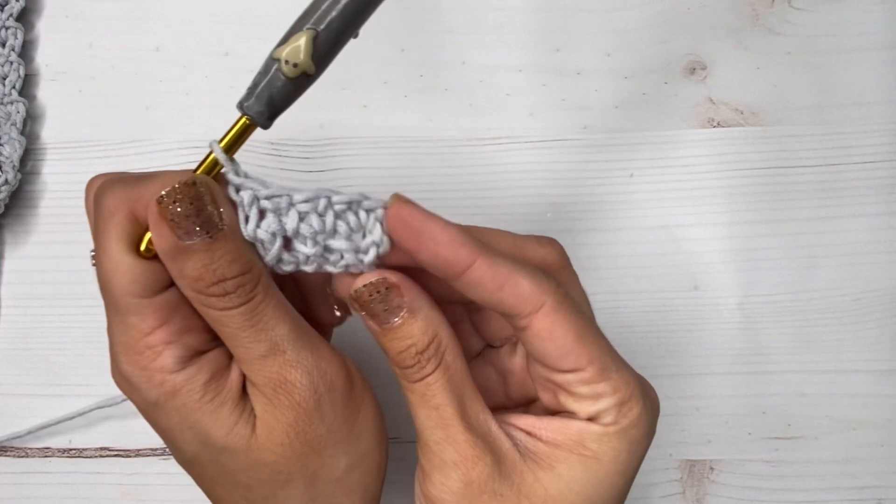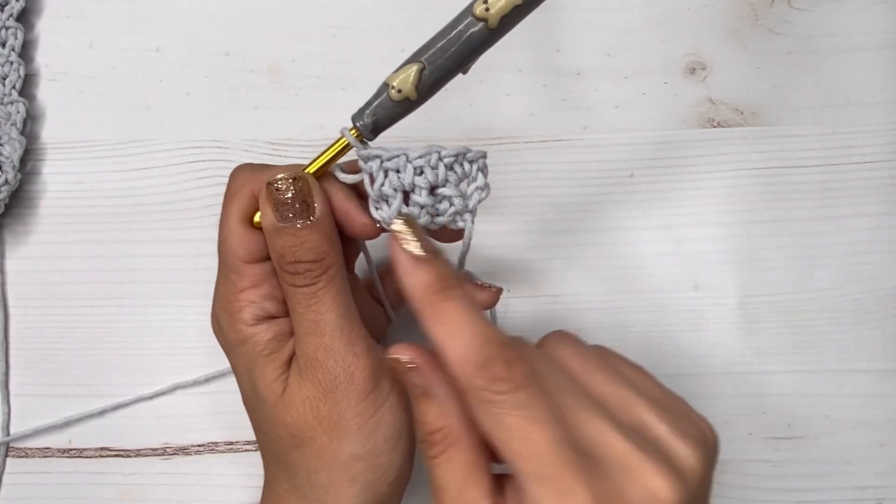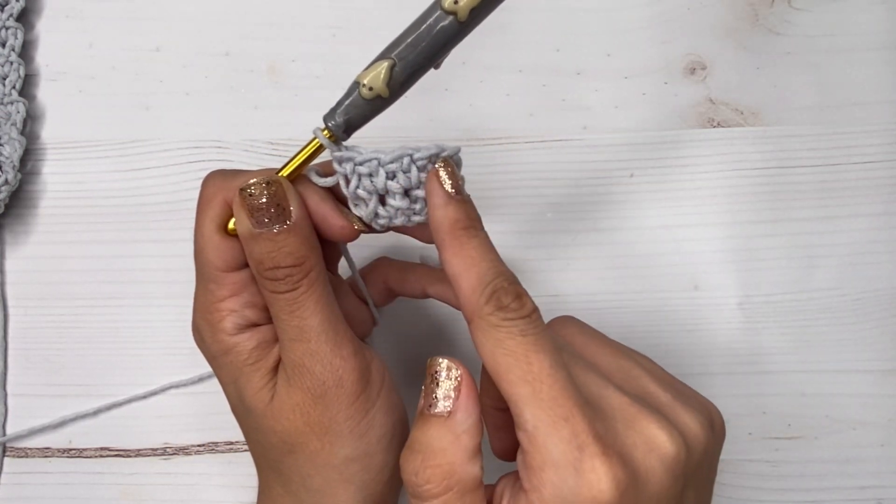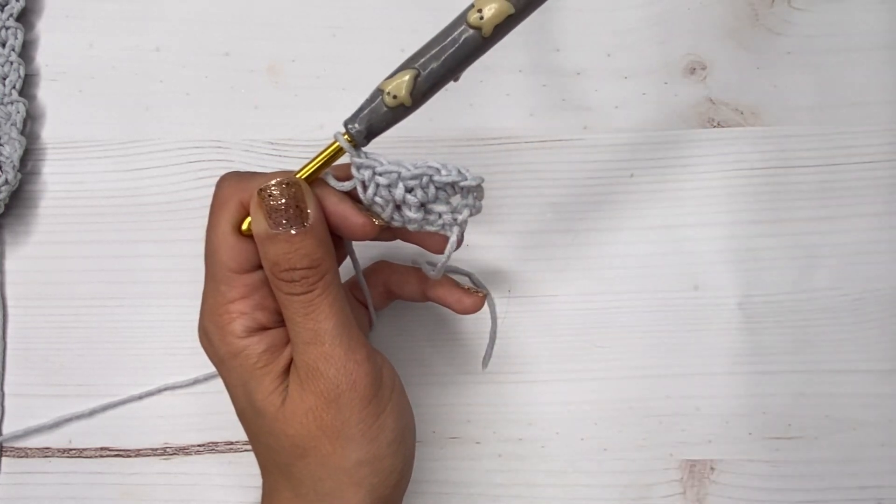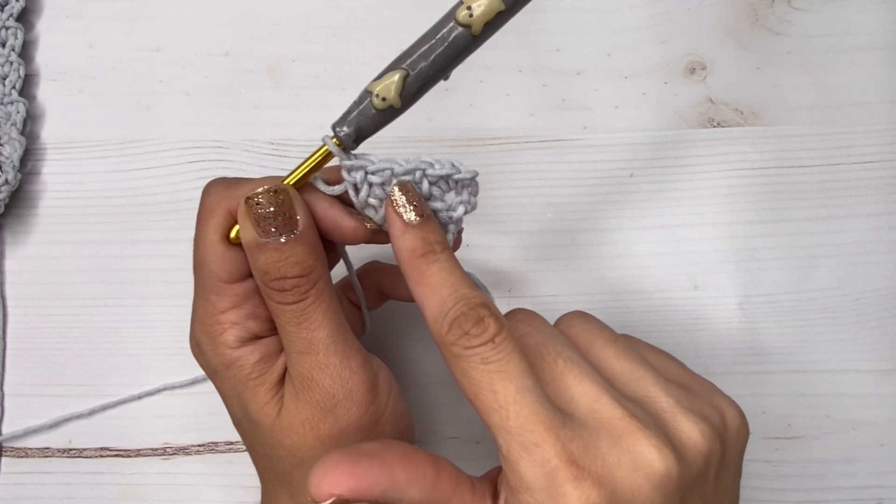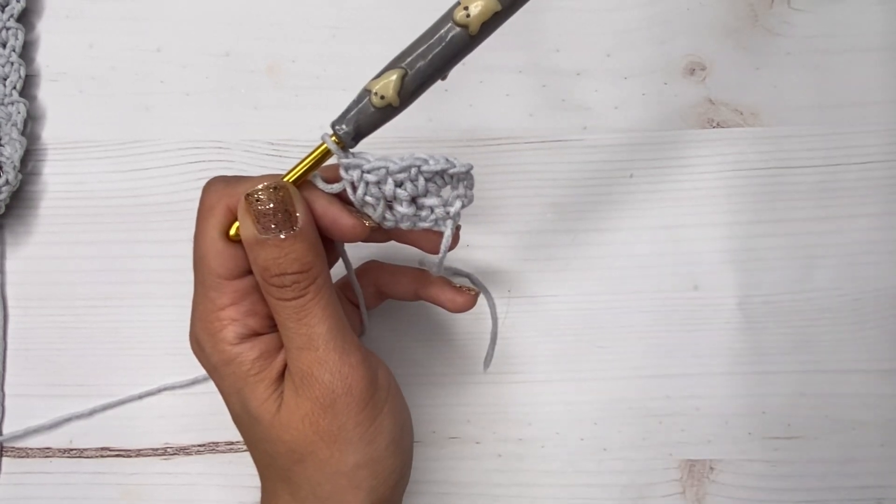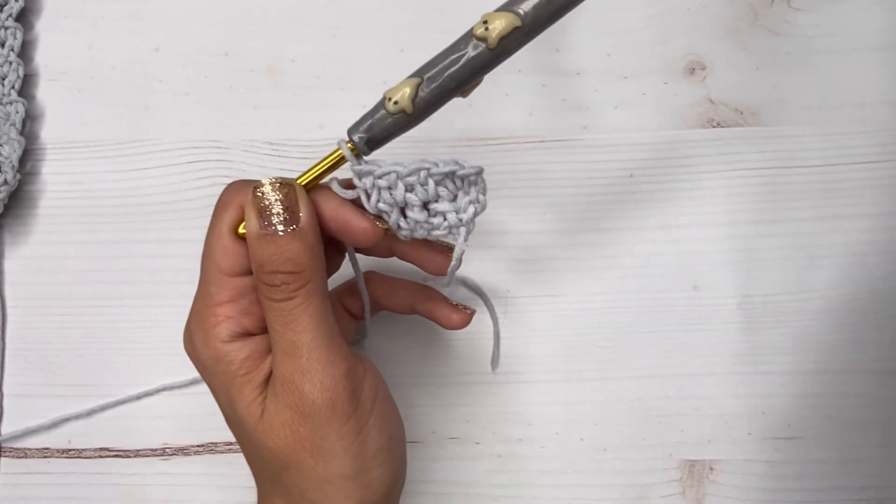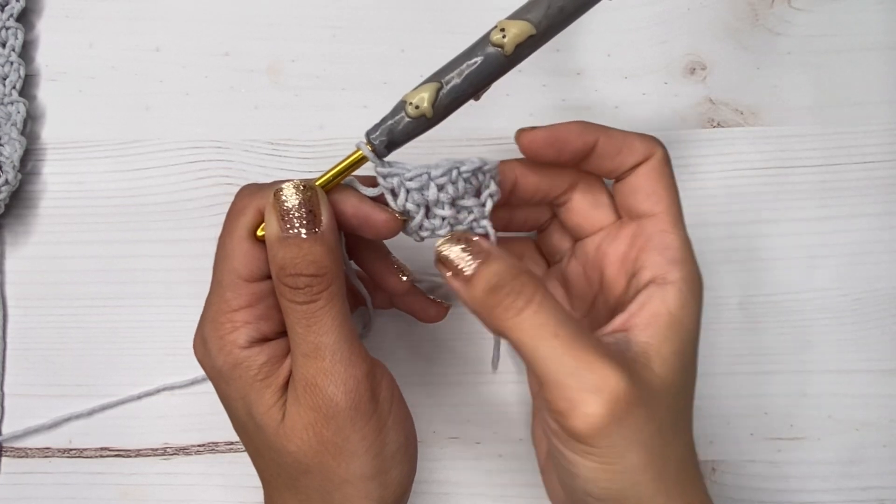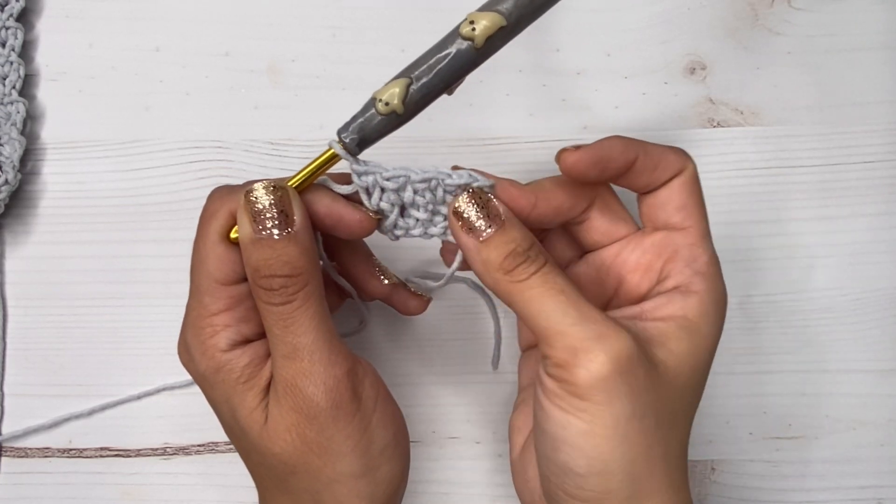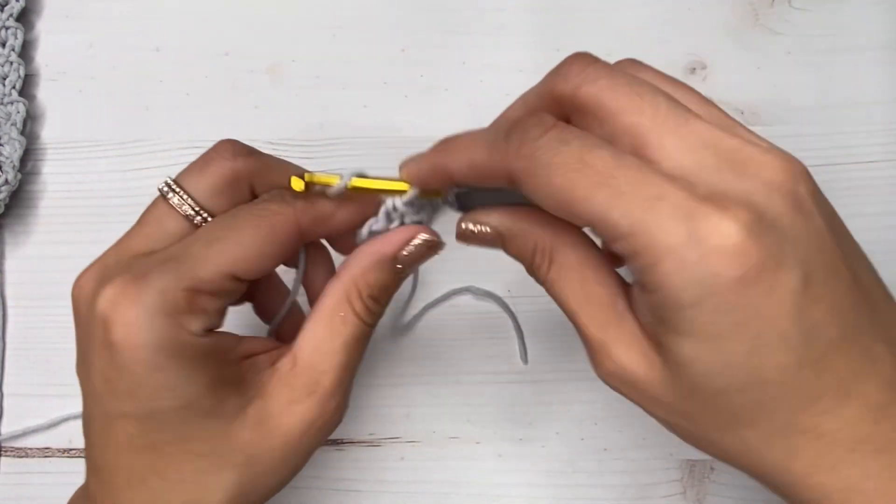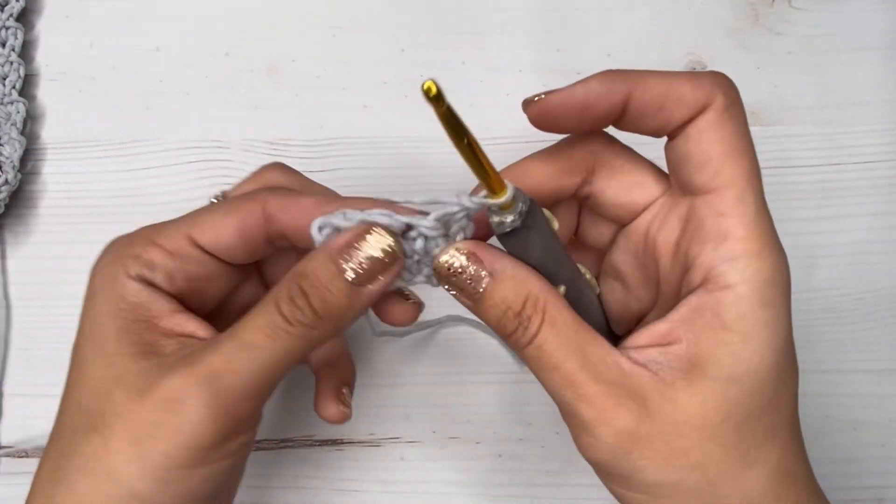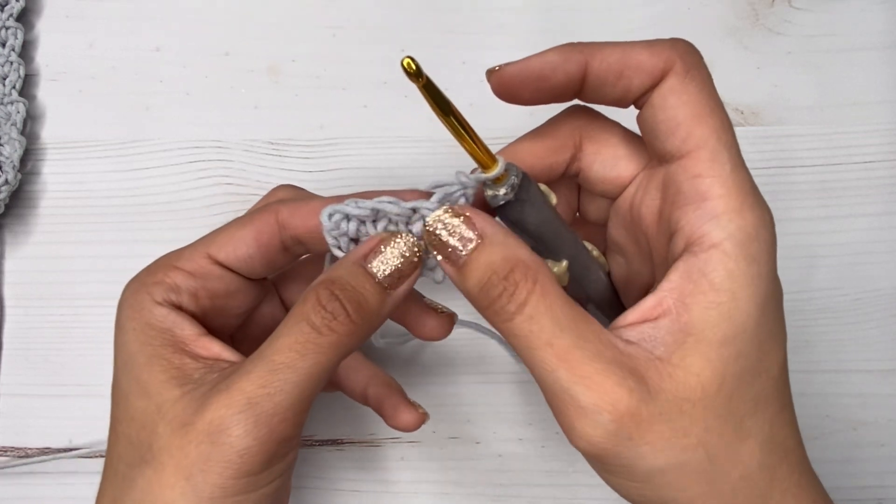All right guys, so from here on you're going to repeat the same steps: chain one, turn, and make an extended single crochet all the way across. And we're going to repeat this until our project measures 11 inches long, or if you want your keychain to be longer, just keep going until it measures the amount that you want it to be. But for mine it was 11 inches long.